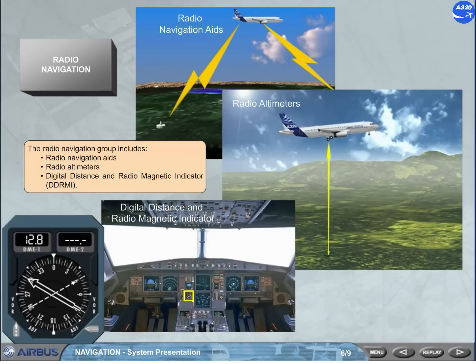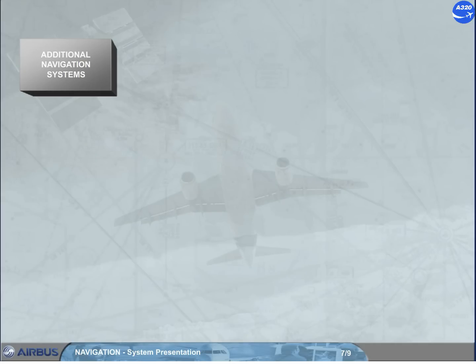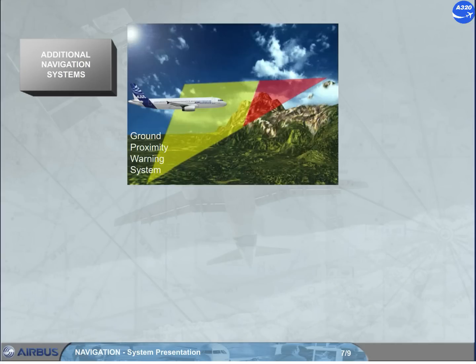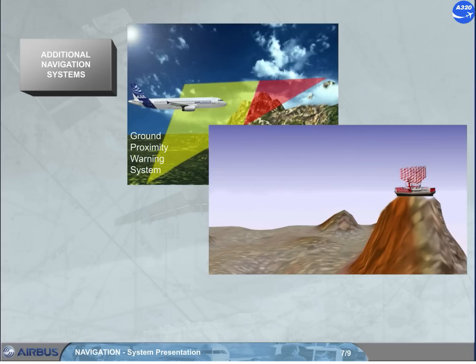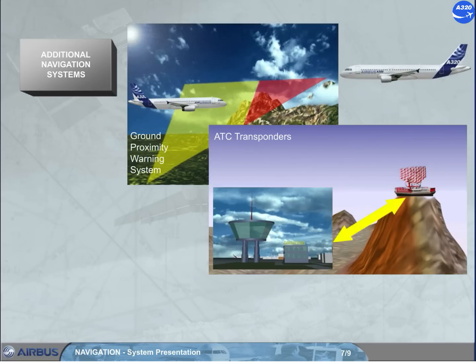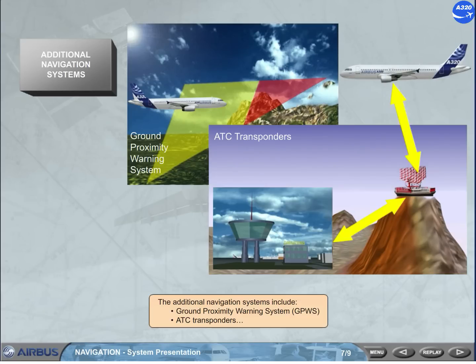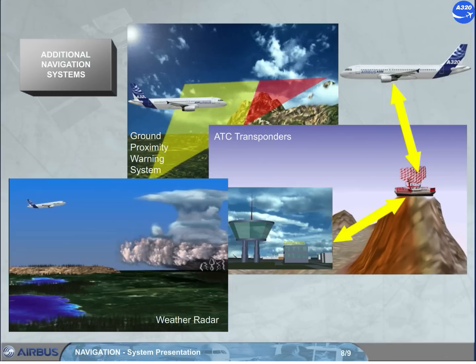The additional navigation systems include ground proximity warning system (GPWS), ATC transponders, and weather radar.